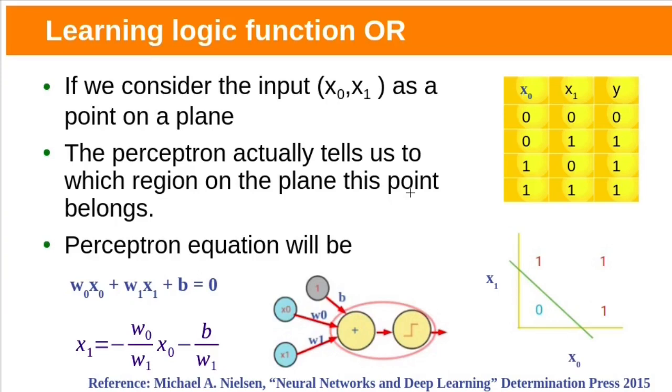Let's see how Perceptron can be used as model to learn logic function OR. Here our training set: if inputs x0, x1 both are 0's, then output will be 0. In all other three cases (0,1), (1,0), (1,1), output will be 1. If we consider the input x0, x1 as point on the plane, corresponding output value is plotted here. Perceptron tells us to which region on the plane this point belongs to.